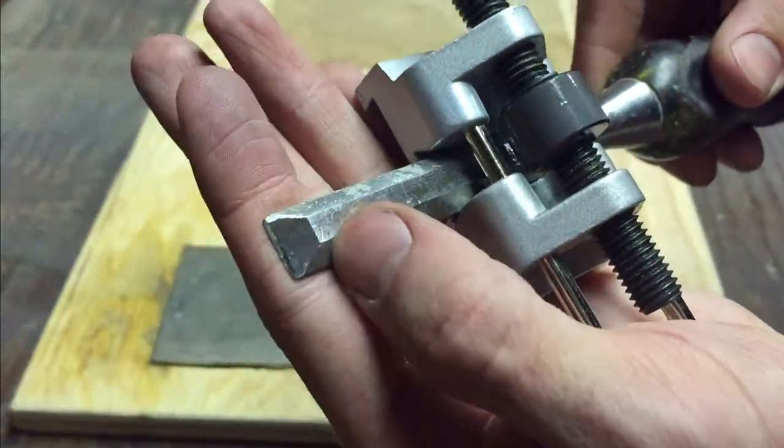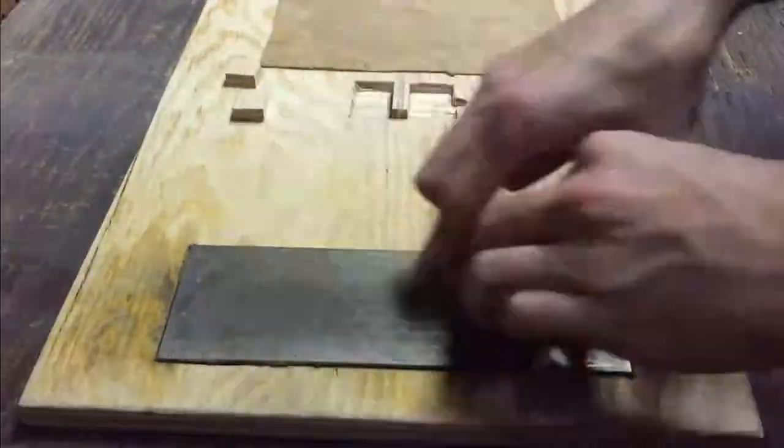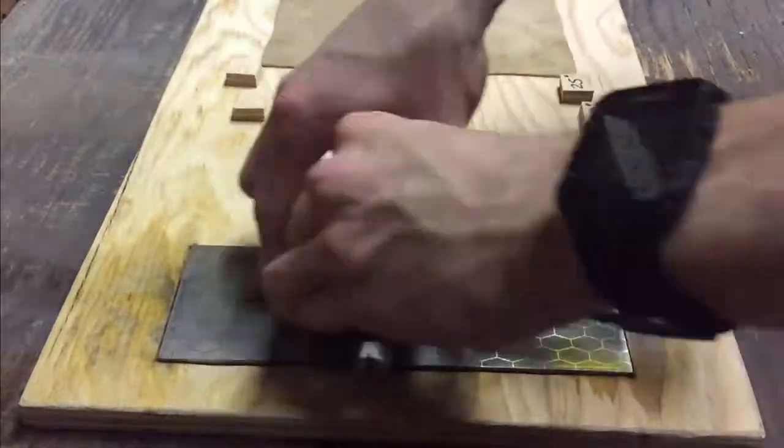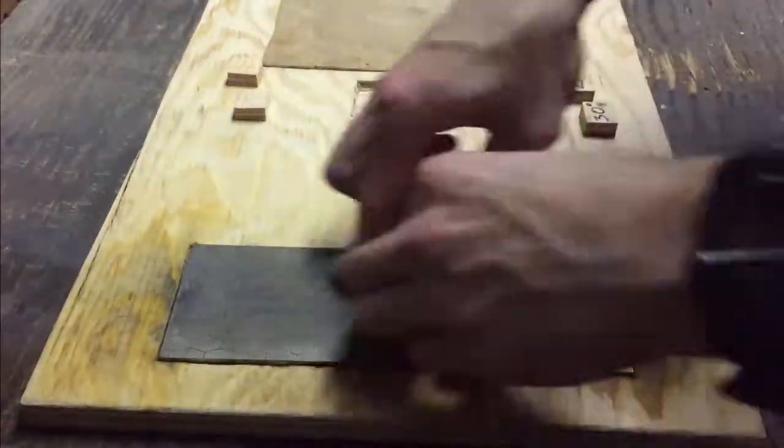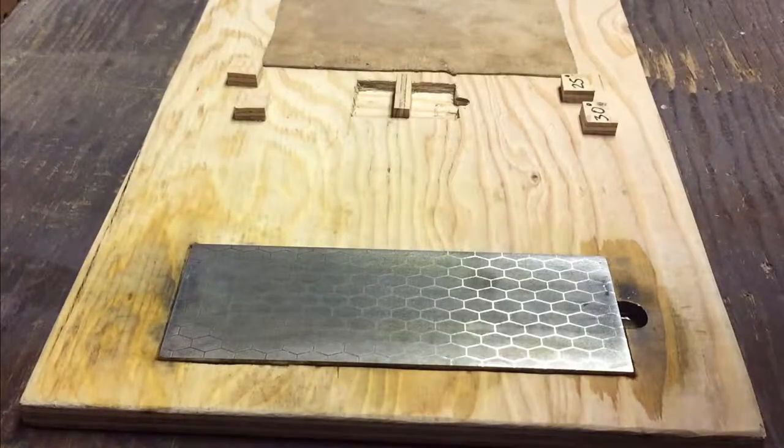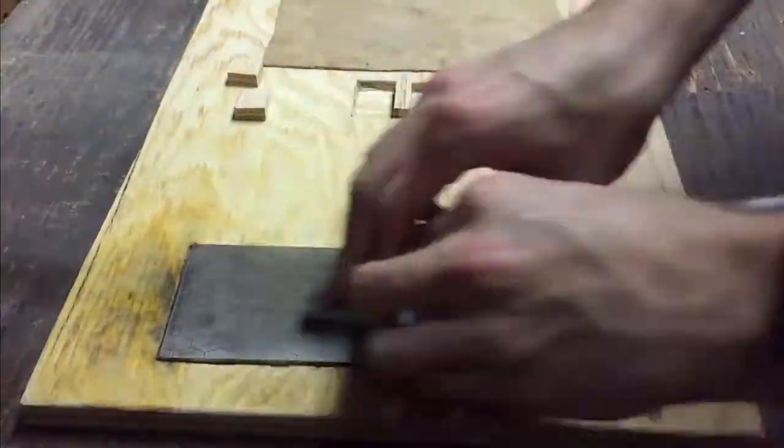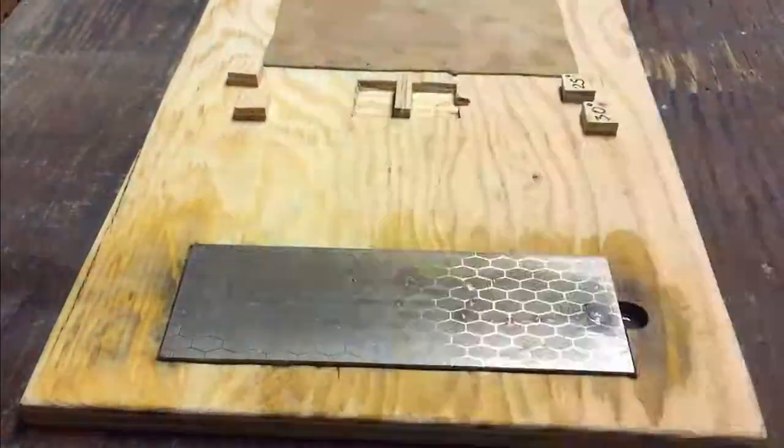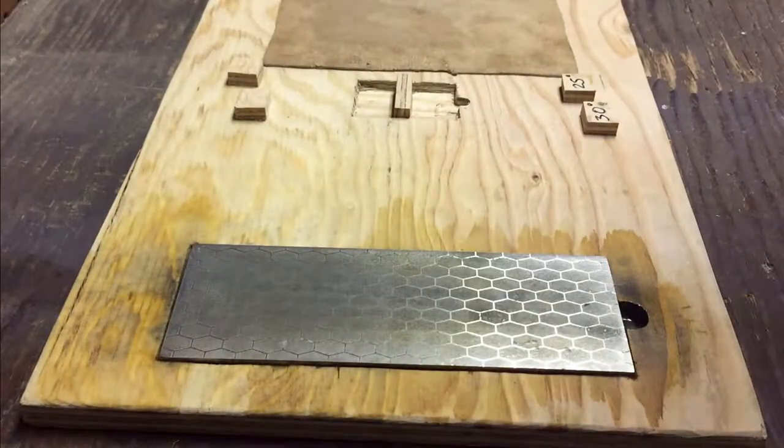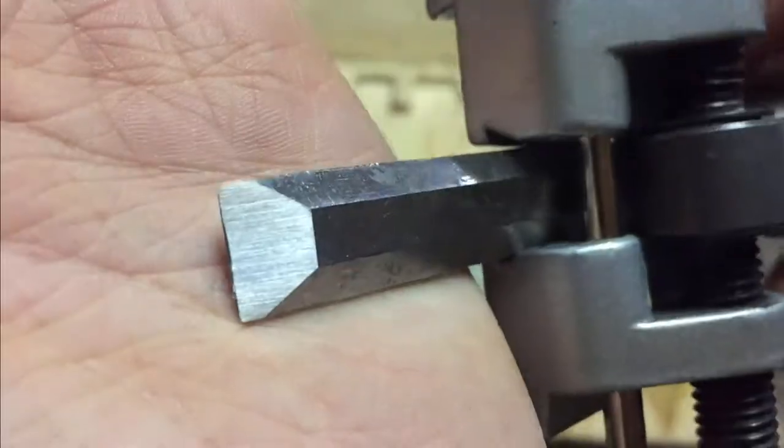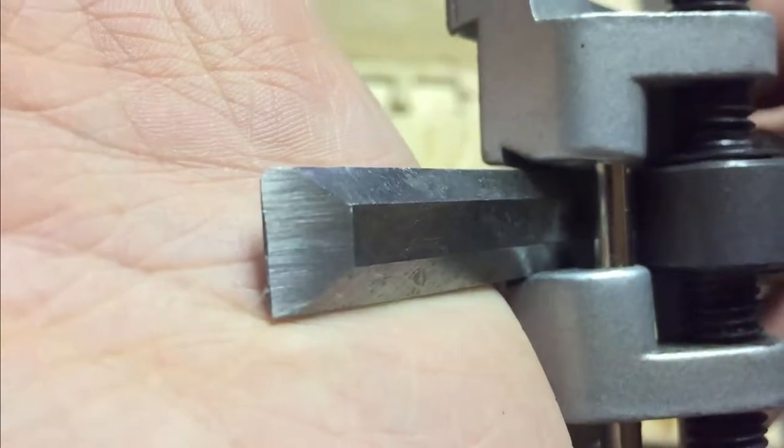So here you can see that it's starting to flatten out. This was actually quite long because my chisel was very beat up. It took me about a good 40 minutes just to have it flat. But it was to prove you guys that any chisel can be restored.